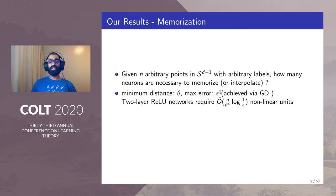We show that via gradient descent over the recombination weights only, we can have a two-layer neural network with Õ(n/θ⁴) non-linear units memorize these labels.